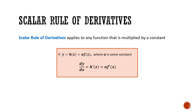Now for the second rule in this video: the scalar rule of derivatives. This applies to any function that is multiplied by a constant. We write it as: if y = a · f(x), where a is a constant multiplied by some function of x, then the derivative is a times f prime of x.